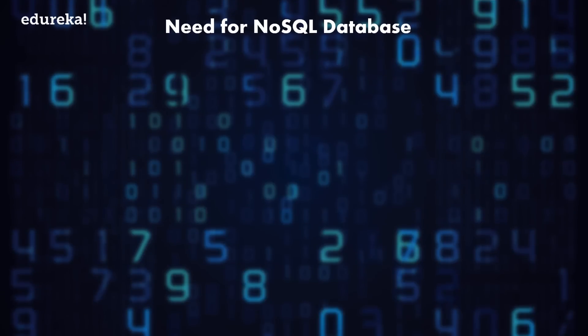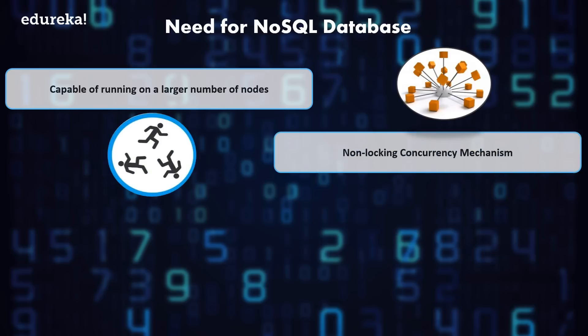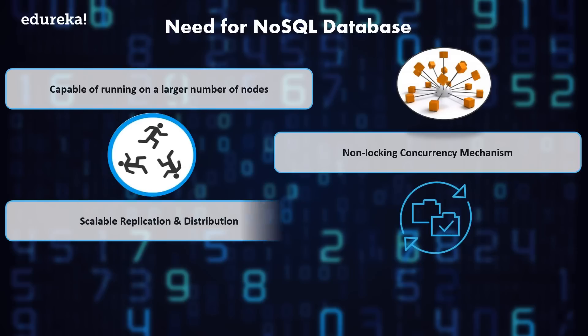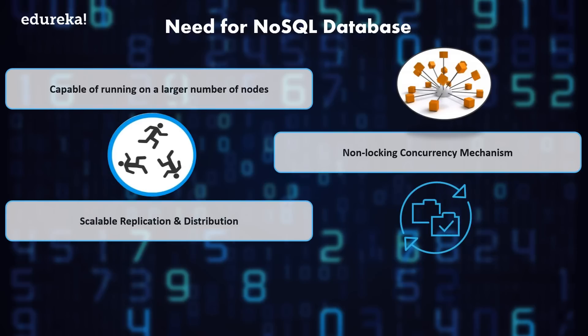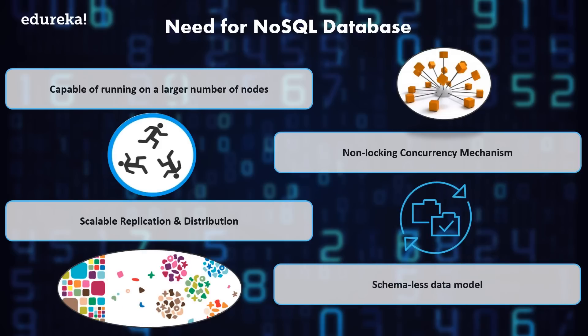What is the need for NoSQL databases? Compared to relational databases, NoSQL databases are more scalable and provide superior performance. Some solutions provided by NoSQL databases: they can scale out data easily and have a shared-nothing architecture capable of running on a large number of nodes. They also provide a non-locking concurrency control mechanism so that real-time reads will not conflict with writes. They can scale and replicate across thousands of machines with distributed data, and the architecture provides higher performance per node than RDBMS with a schema-less data model.